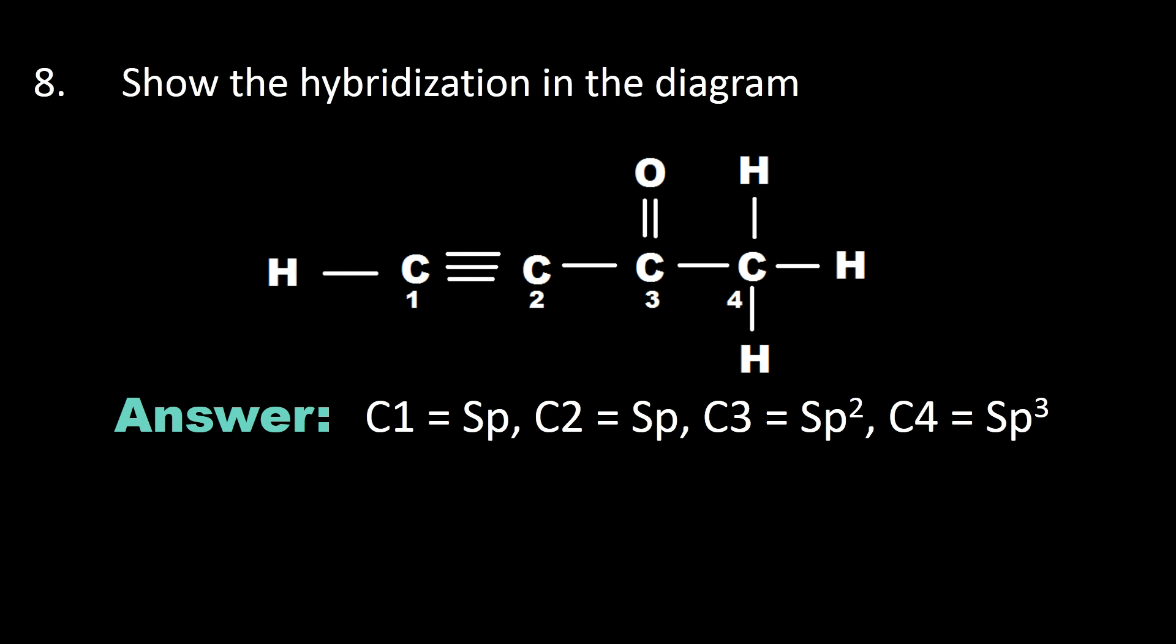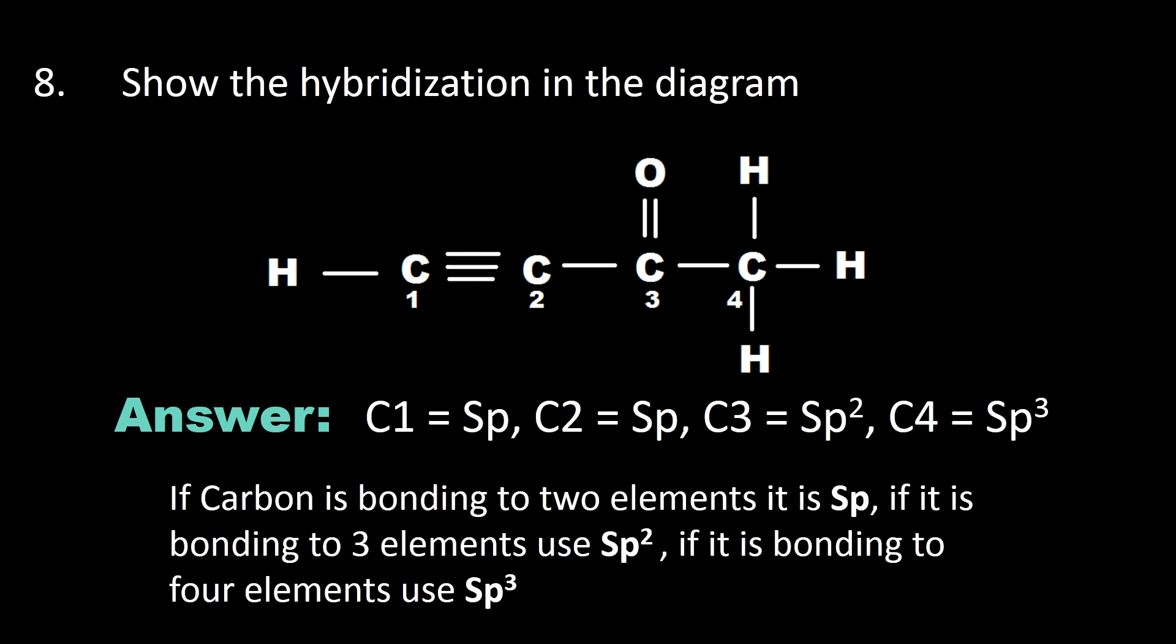There are some quick things I want you to know about hybridization. If carbon is bonding to two elements, it is sp, ignoring the kind of bonds. Even if there is a triple bond there, if carbon is bonding to two elements it is sp. If it is bonding to three elements, use sp².